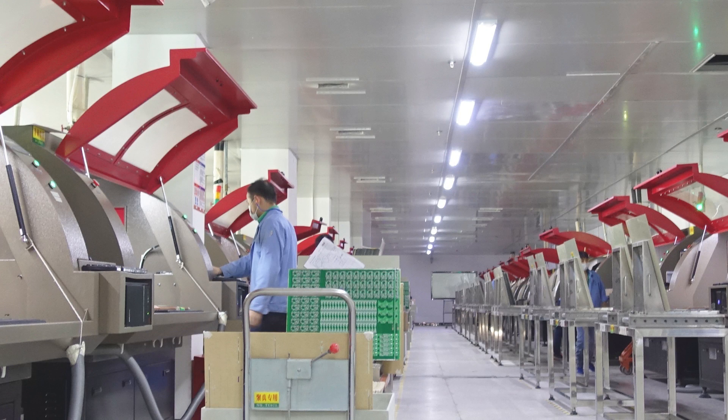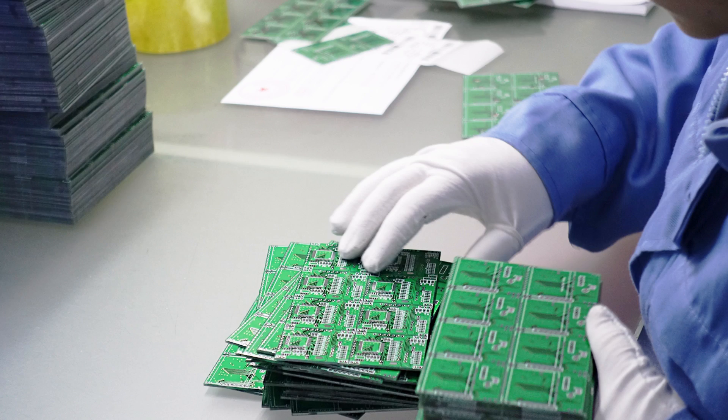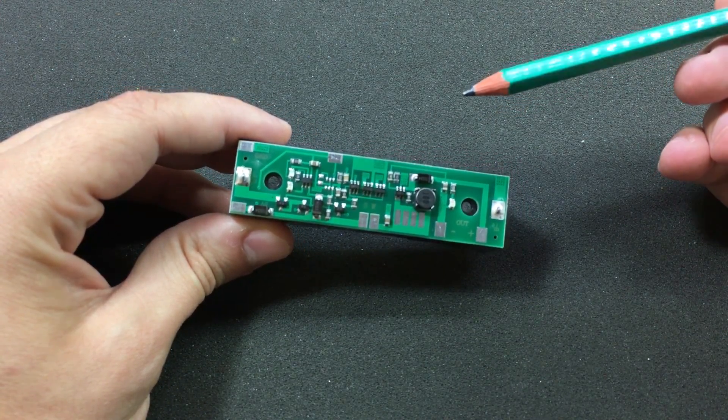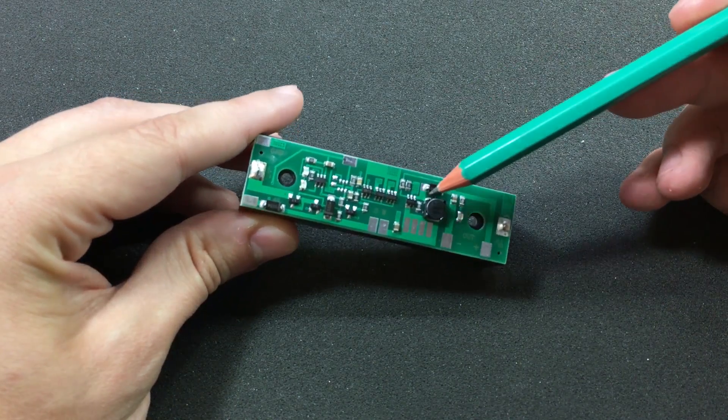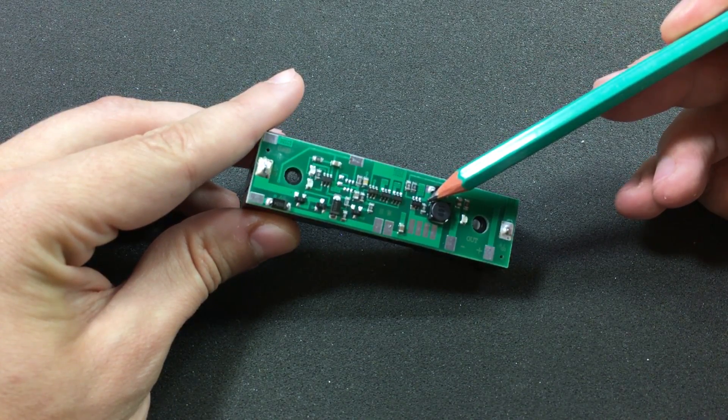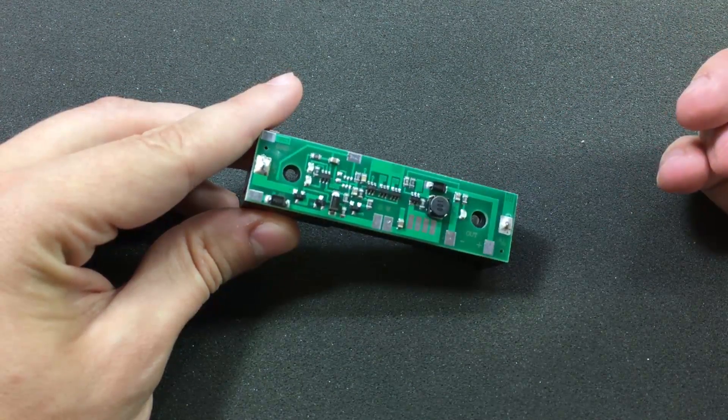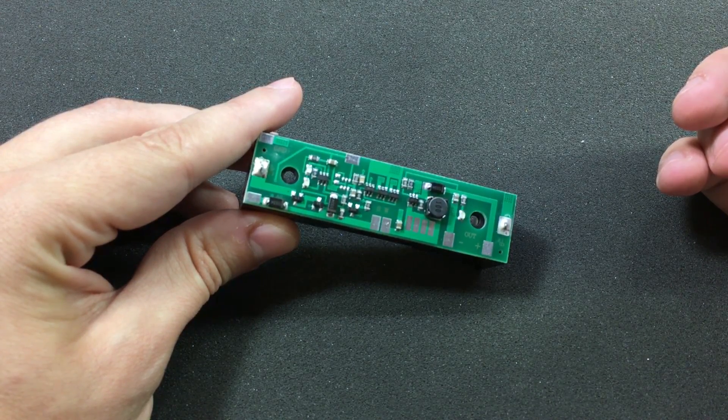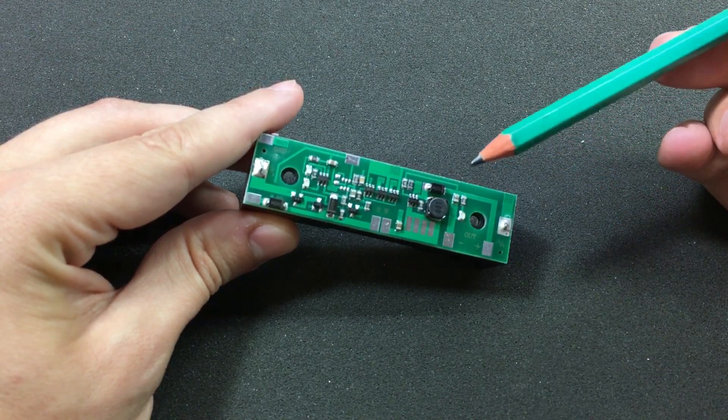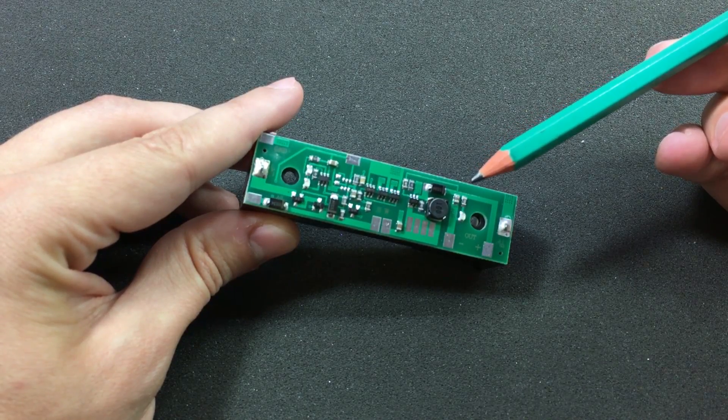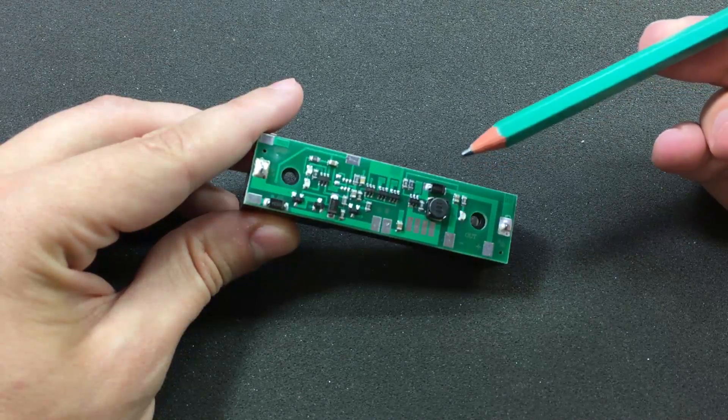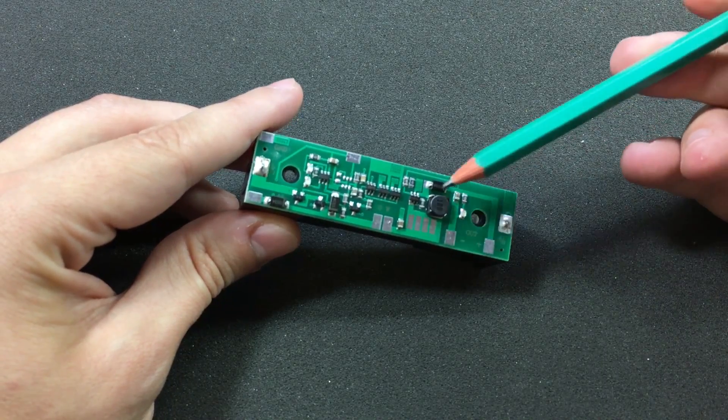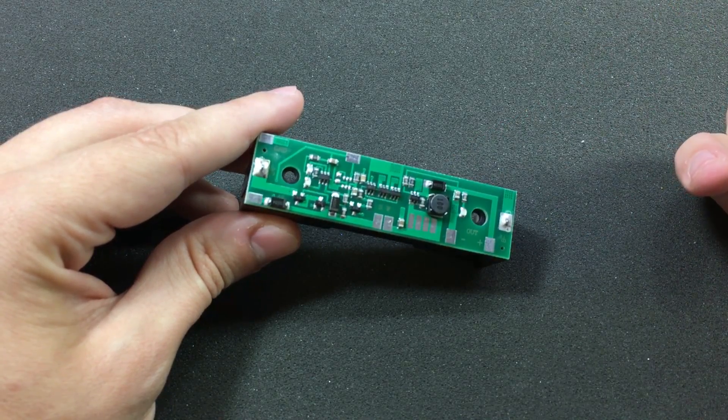There is even a current limit option which can be set with an external resistor, which is this one right here. In the case of this module, the current limit is set to 2.6A, and that doesn't make sense to me since the maximum current limit feature is described to go up to 2.5A. But anyway, that's how they set it on this module.